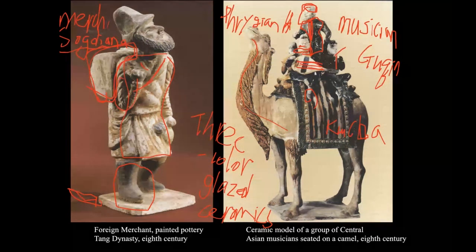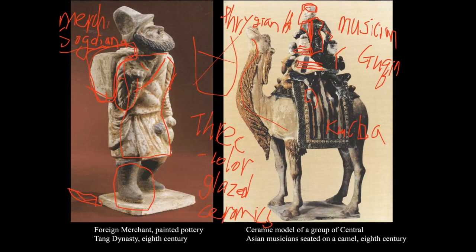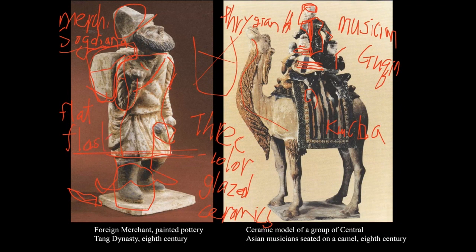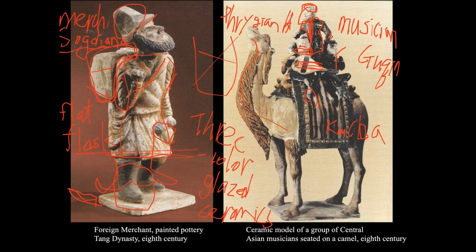Do you see the tight sleeves? Chinese people had really elongated, big sleeves, but those aren't suitable for travelers. It's always a knee-length tunic. This person has a similar Phrygian hat, a backpack, and most importantly, a flat flask for water during travel. Originally, the flat flask was made of animal intestine — like a camel's stomach — because it is very durable, almost like rubber. Eventually, Chinese people imitated these flat flasks in ceramics in the exact same shape.